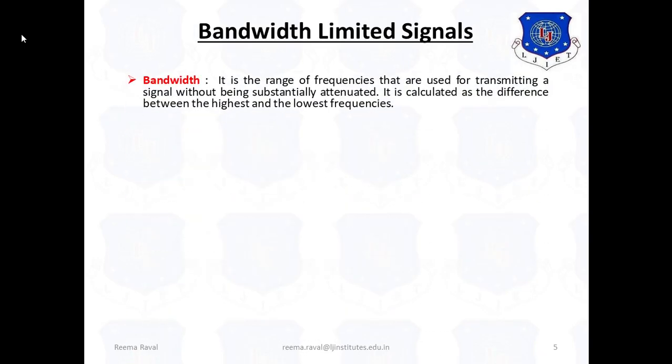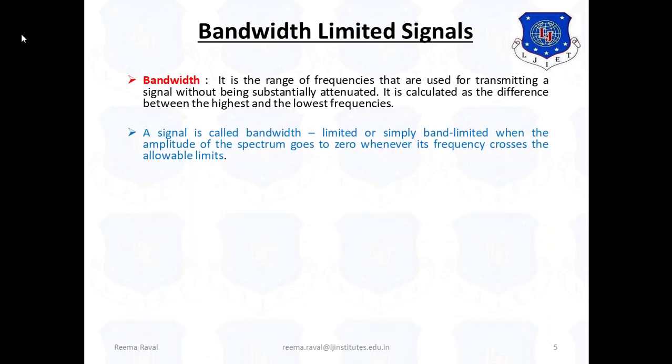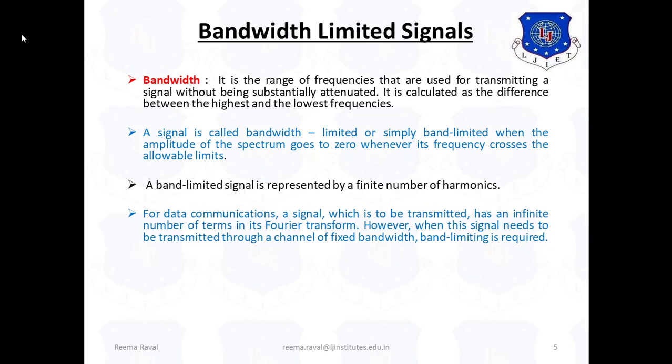Now, let us see bandwidth limited signals. First of all, let us see what is bandwidth. Bandwidth is a range of frequencies that are used for transmitting a signal without being substantially attenuated, and it is calculated as the difference between the highest and lowest frequencies. A signal is called band limited or simply band limited, when the amplitude of the spectrum goes to 0, whenever its frequency crosses the allowable limits.